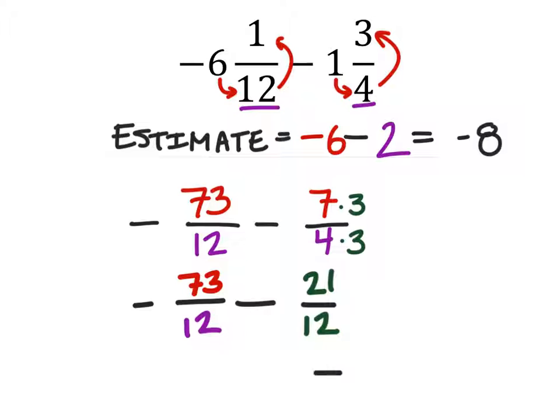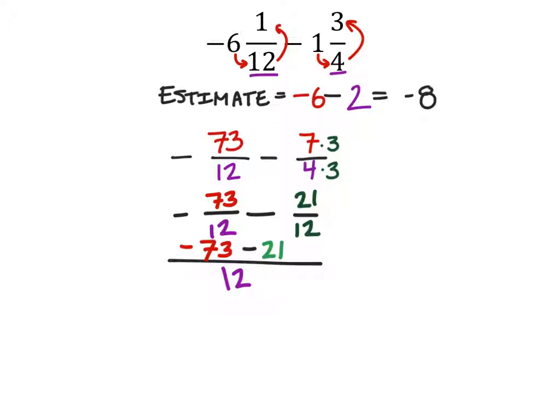And I can make this all one big fraction with a denominator that is 12. So this means that my first number here is a negative 73 and then we were subtracting that 21 there. So we'll put that 21 here. Then I have negative 73 minus 21 which is going to give me a bigger negative number and that would be negative 94. This is all over 12.